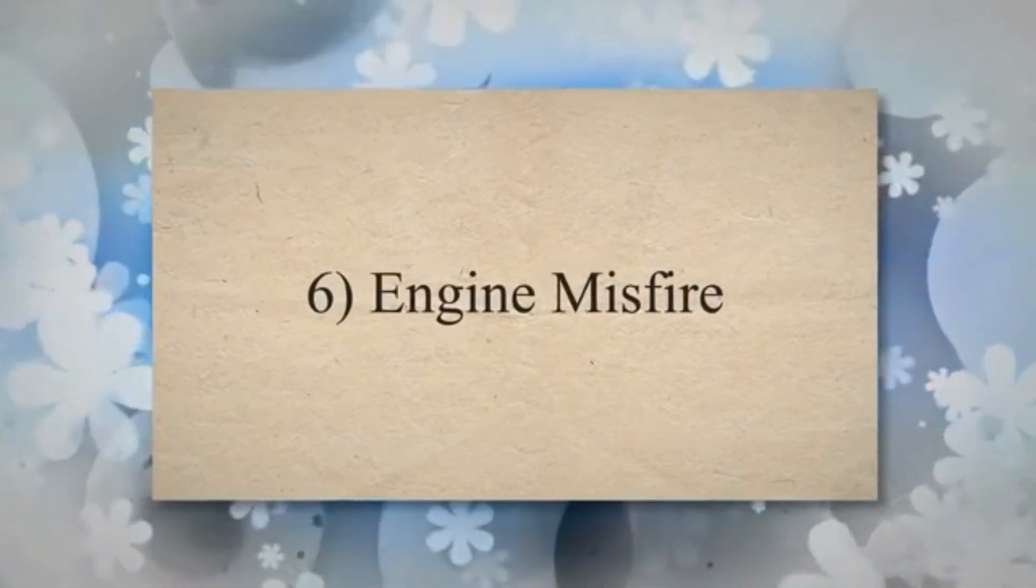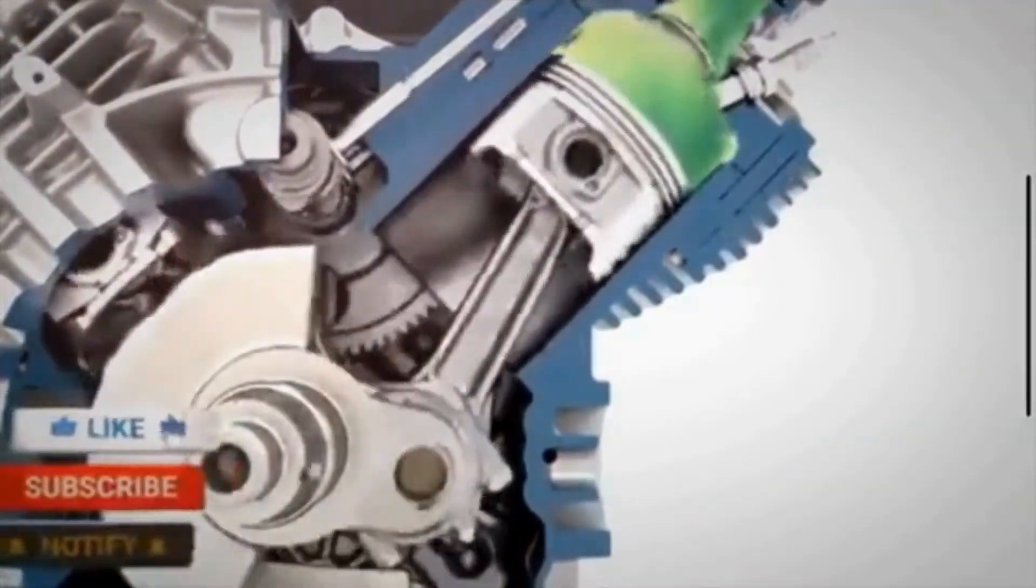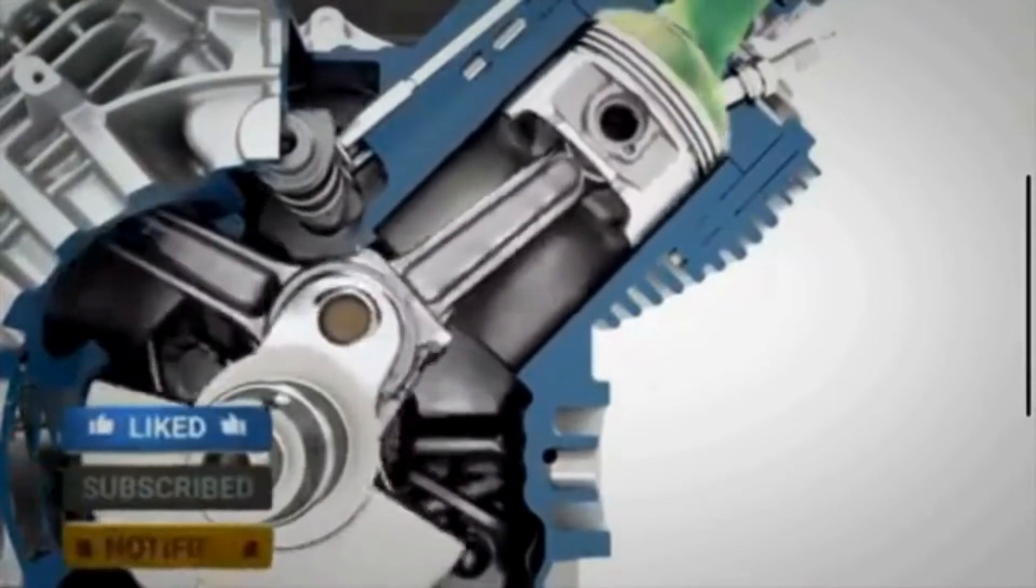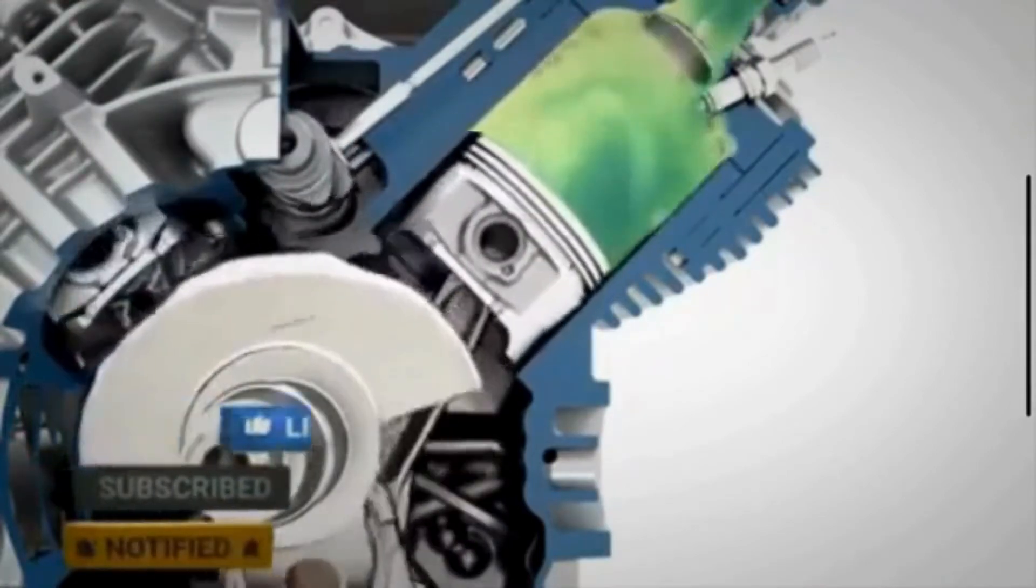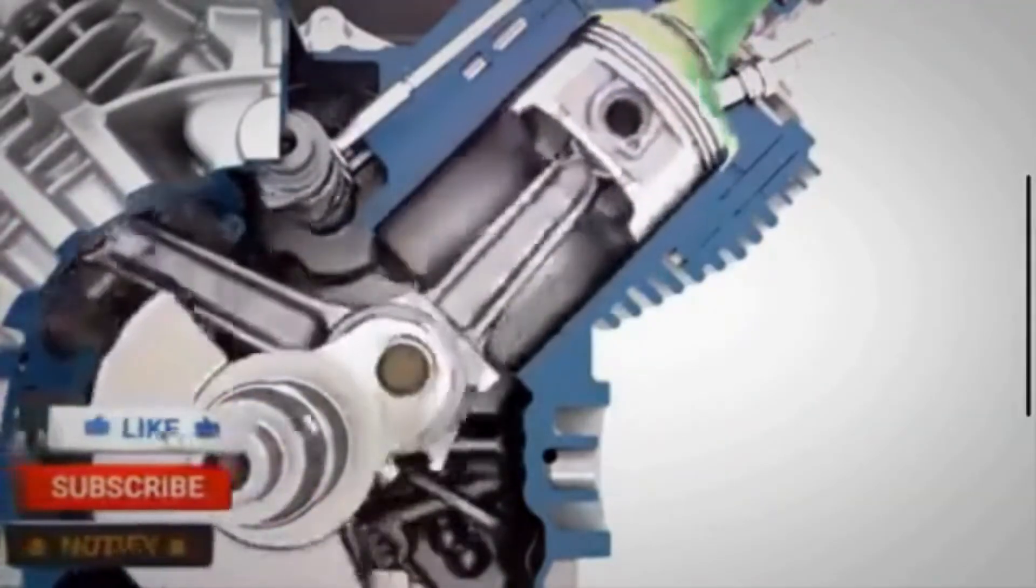6. Engine Misfire. Frequent misfires in the engine can lead to unburned fuel entering the exhaust system. This can damage the catalytic converter and cause it to be less effective in reducing emissions, potentially triggering the P0430 code.